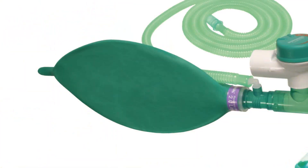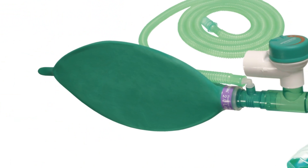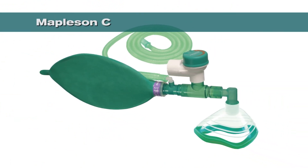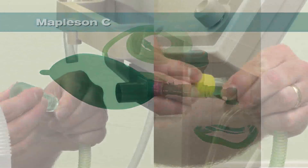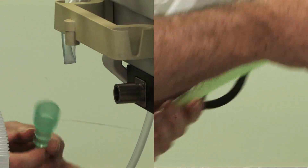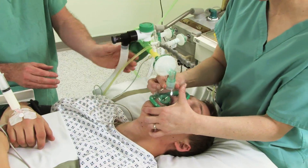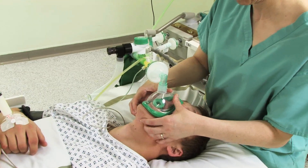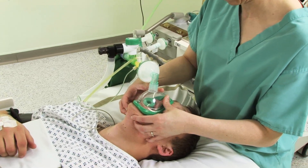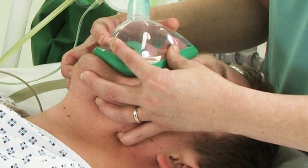In order to manually ventilate a patient, an anaesthetic breathing system such as the Mapleson C can be utilised. Connected to an oxygen supply at the fresh gas outlet, a correctly fitting face mask is placed over the patient's face in order to obtain a tight seal. This can be achieved by hooking the 5th finger at the angle of the jaw, holding the mandibular body with the 3rd and 4th fingers and holding the mask between the index finger and thumb at the position of the angle mount.